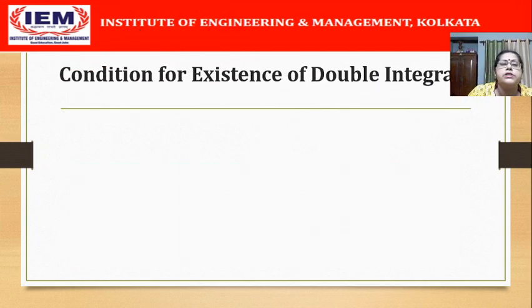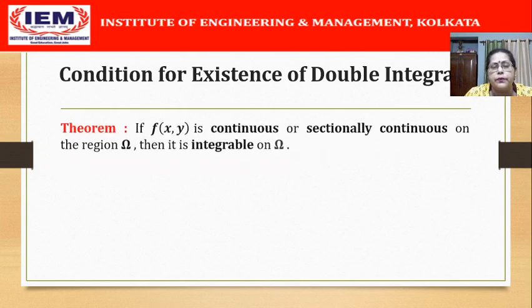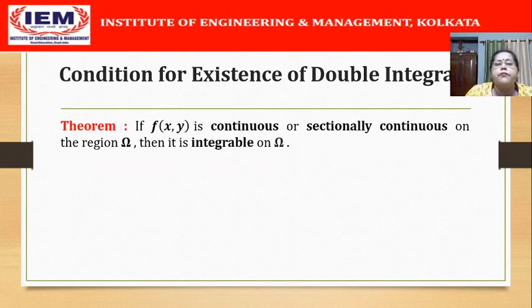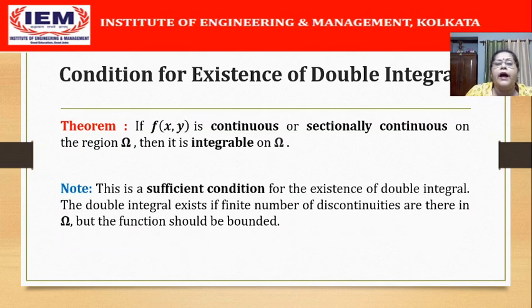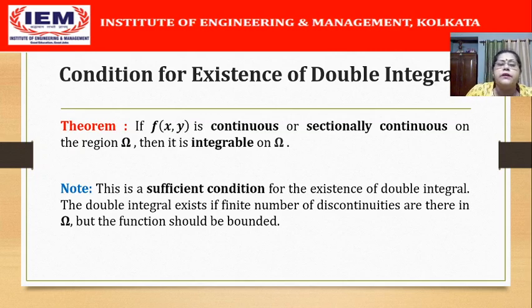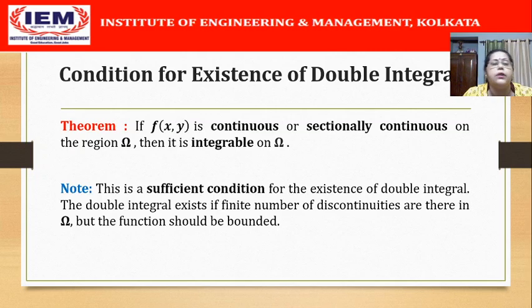Now the condition for existence of double integrals — we have a theorem for that. If f(x,y) is continuous or sectionally continuous on the region omega, then it is integrable on omega. We should note that this is a sufficient condition for the existence of the double integral. The double integral can also exist if there are a finite number of discontinuities in omega, but the primary requirement is that the function should be bounded.